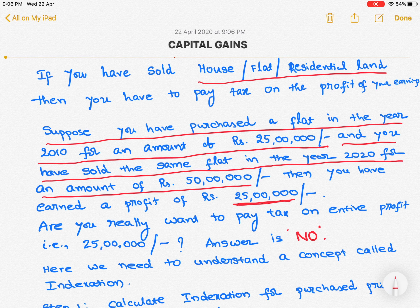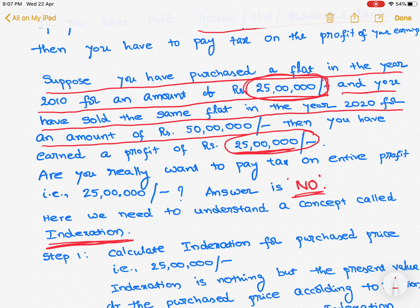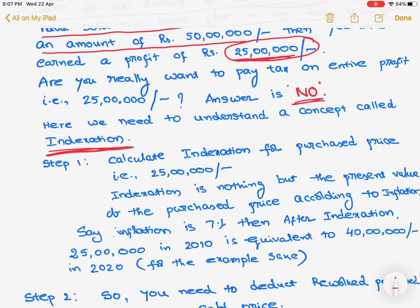Do you really want to pay tax on that entire 25 lakhs? The answer is no. Why? Because at the time of 2010, your property value was 25 lakhs, and you already paid 25 lakhs to acquire that property. But that value of 25 lakhs may have been increasing — that concept is called indexation. So what we need to do is first calculate the indexation for the purchased price, that is, for the 25 lakhs.